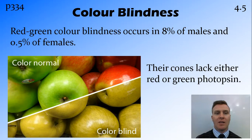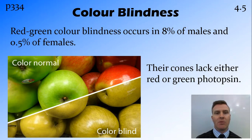Here in this picture you can see there are red and green apples. On the top is what a normal colour vision person would see, being able to fairly easily distinguish between the red apples and the green apples. The bottom half of this is what a colour blind person would see.